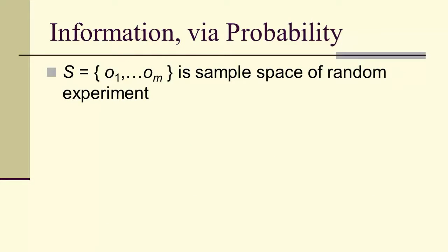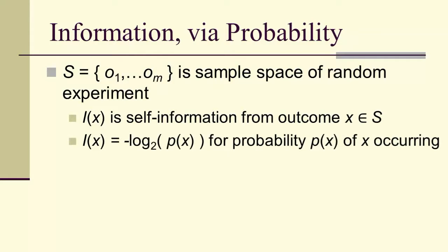So again, suppose we're looking at a sample space of a random experiment. I of X is the self-information from the outcome X in S, and it's the negative log base 2 of the probability.